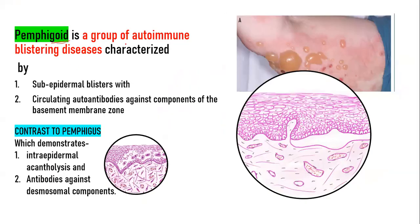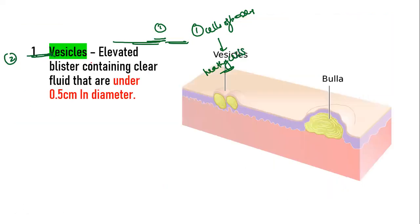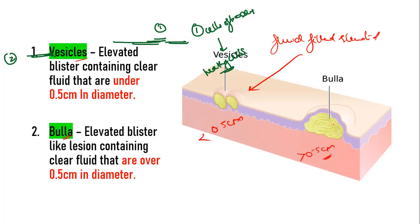Pemphigoid is a group of autoimmune blistering diseases characterized by subepidermal blisters and circulating antibodies against the basement membrane. It is an autoimmune disease where cells of the body attack one's own healthy cells. It is a blistering disease with formation of vesicles and bullae — fluid-filled elevated lesions. If less than 0.5 cm, it is called a vesicle; if greater than 0.5 cm, it is called a bulla.